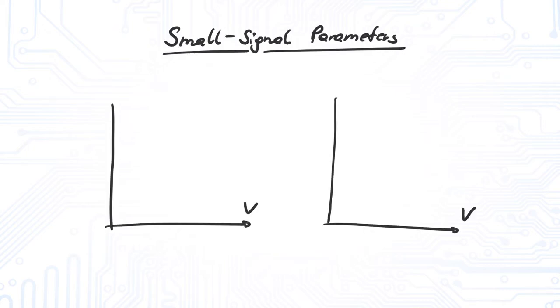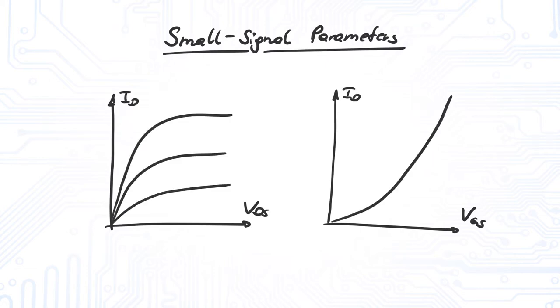These linear functions are determined by the small signal parameters. There are a couple of small signal parameters which are derived from the different characteristics of our transistor.